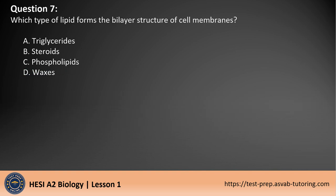Question 7. Which type of lipid forms the bilayer structure of cell membranes? A. Triglycerides. B. Steroids. C. Phospholipids. D. Waxes.